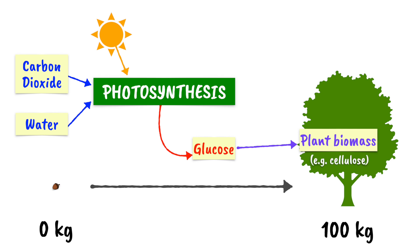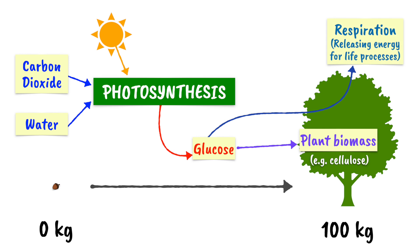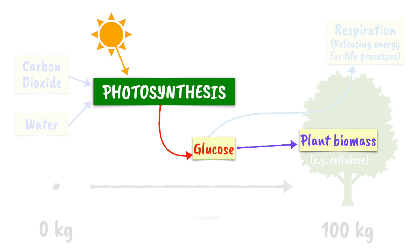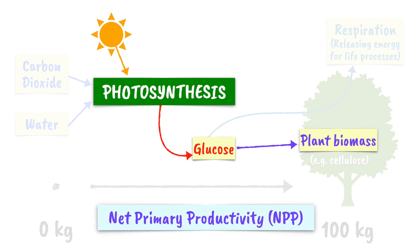The second possible fate of glucose is to be used in respiration, which is how plants, like all living things, release energy for life processes. The rate at which energy is converted to biomass, after accounting for losses due to respiration, is known as the net primary productivity, or NPP.